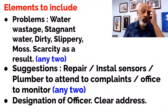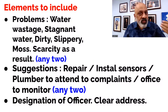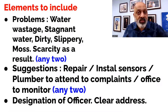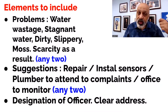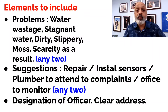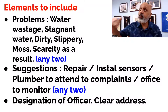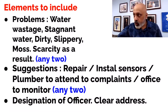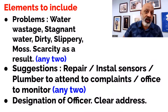Then in the next paragraph, come to the suggestions. You can say: 'We request you to please get a plumber to repair these taps.' You can suggest making it more high-tech — install sensors so that water flows only with human touch, otherwise the taps will not release water. A plumber should attend to complaints regularly so that residents don't have to write to the municipal commissioner every time. Your office can also monitor whether all taps are functioning properly and whether water wastage is happening.